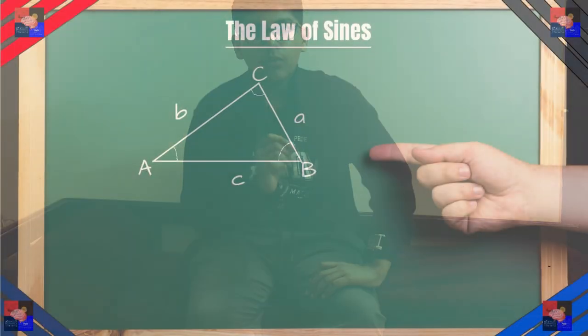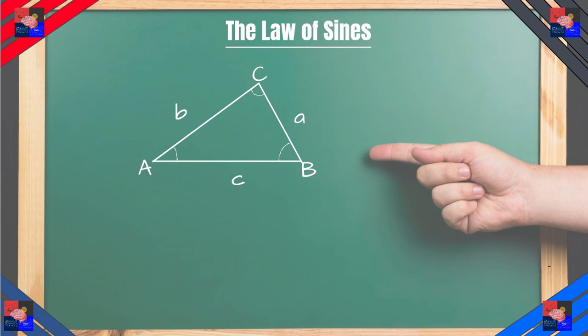So the first one we'll be discussing today is the law of sines. This shows an oblique triangle with angles A, B, and C and sides a, b, and c where the sides are opposite of the angles. So side b is opposite of angle B, side a is opposite of angle A, etc.